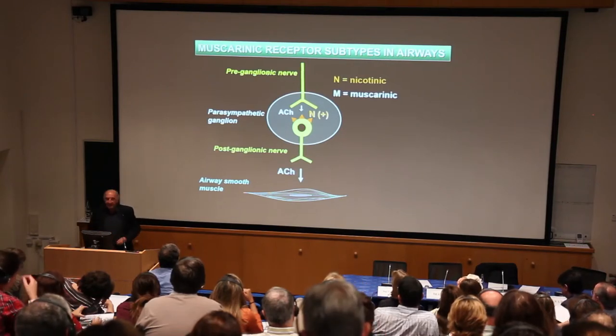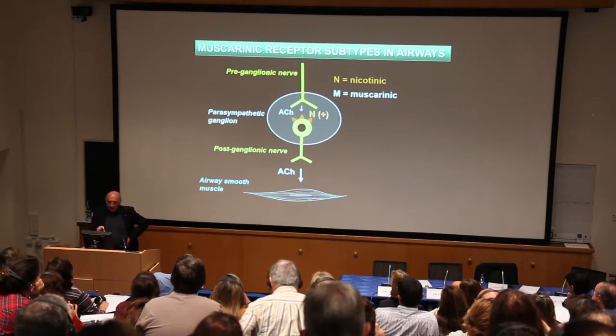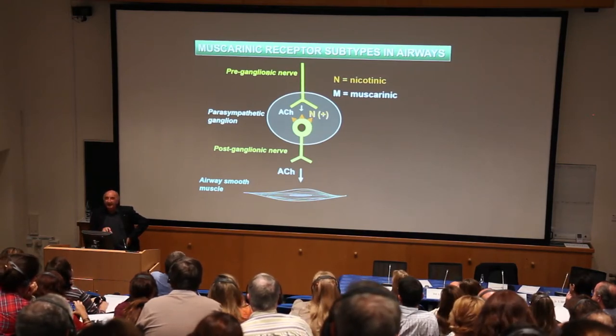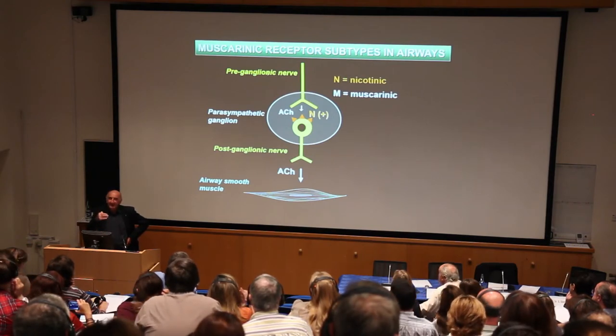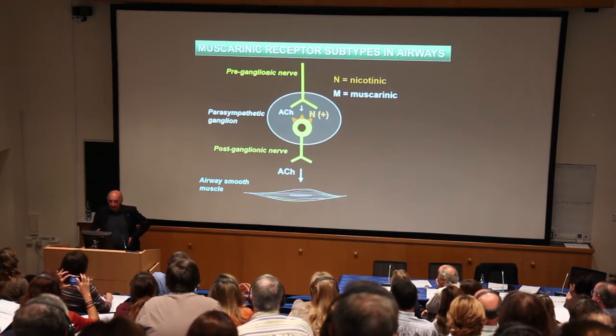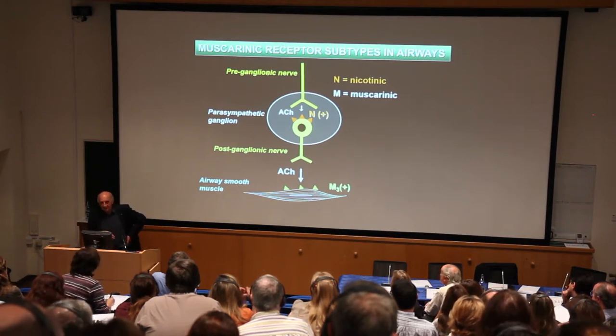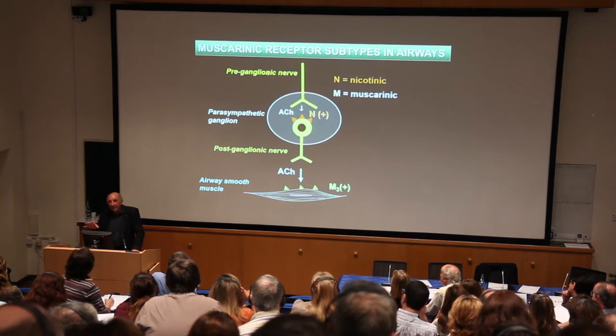The long-acting drugs we now use are mainly targeting the M3 receptor, which is the main muscarinic receptor on airway smooth muscle. There are five subtypes of muscarinic receptor, and three are found in human airways. The pre-ganglionic nerve releases acetylcholine in parasympathetic ganglia in the airway, activating nicotinic receptors — which are ion channels — which then fires the post-ganglionic nerve to release acetylcholine. This acetylcholine then interacts with M3 receptors on airway smooth muscle cells, leading to bronchoconstriction.